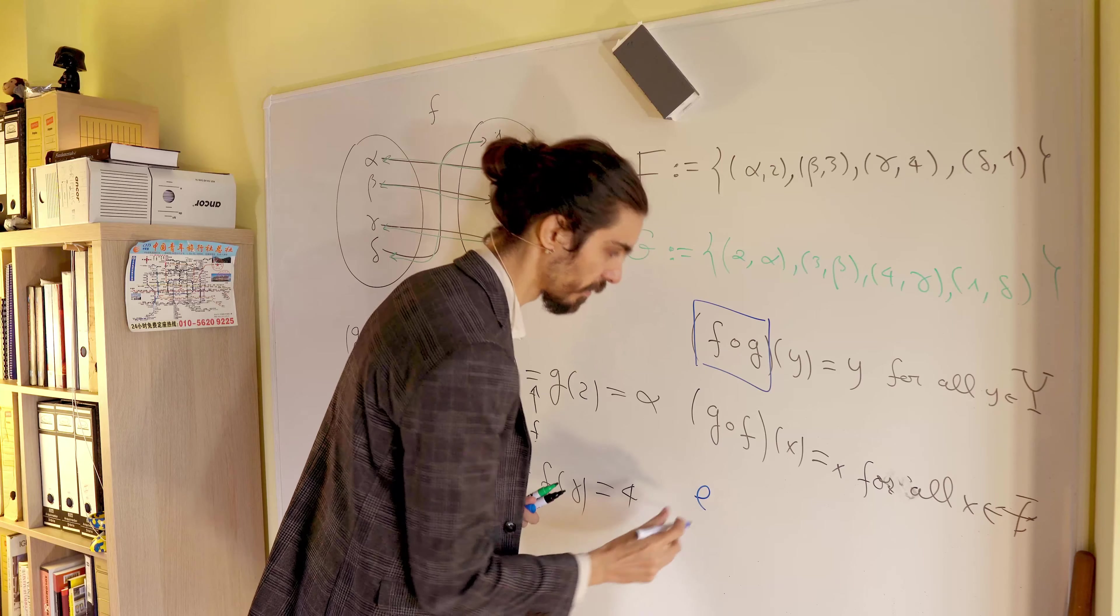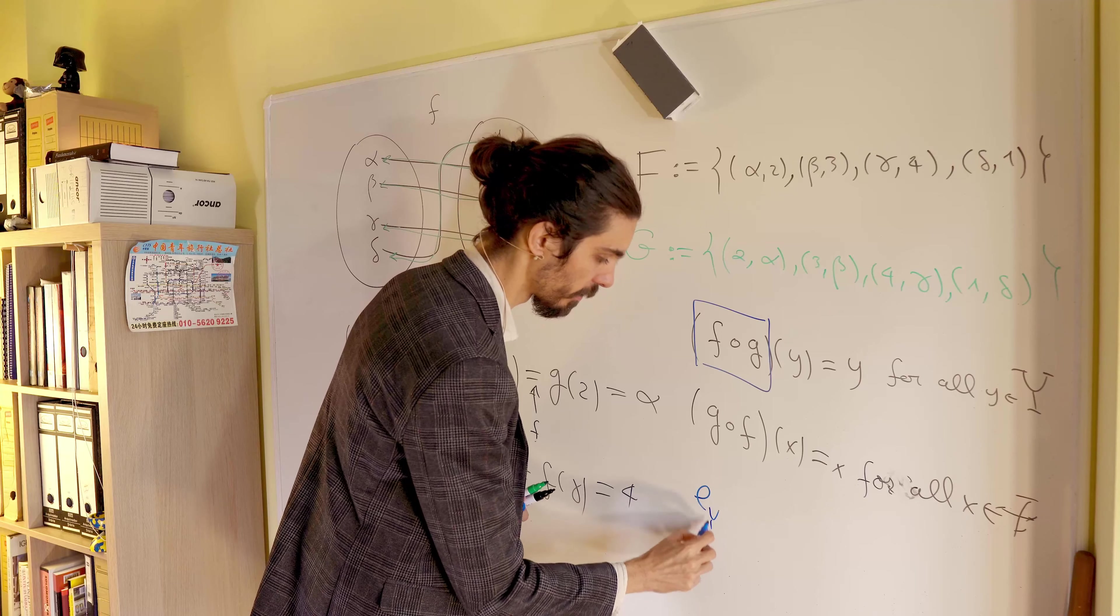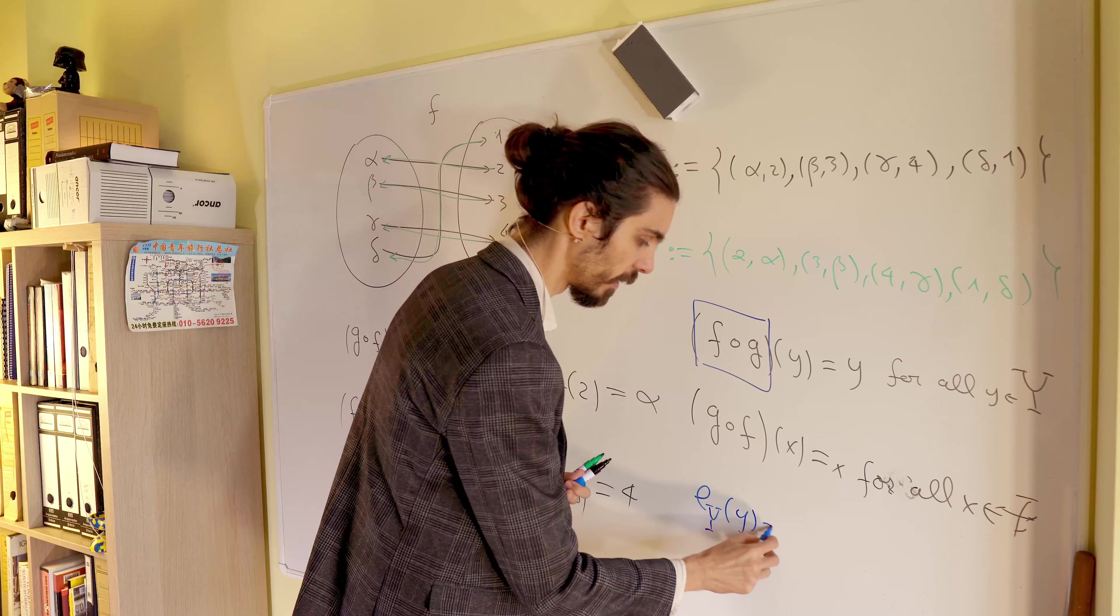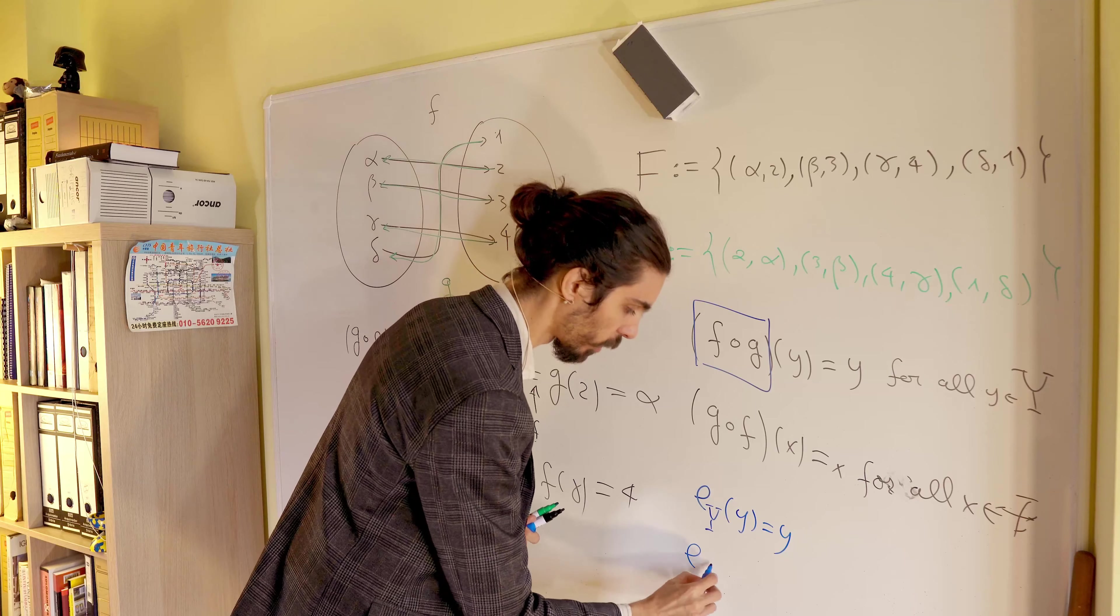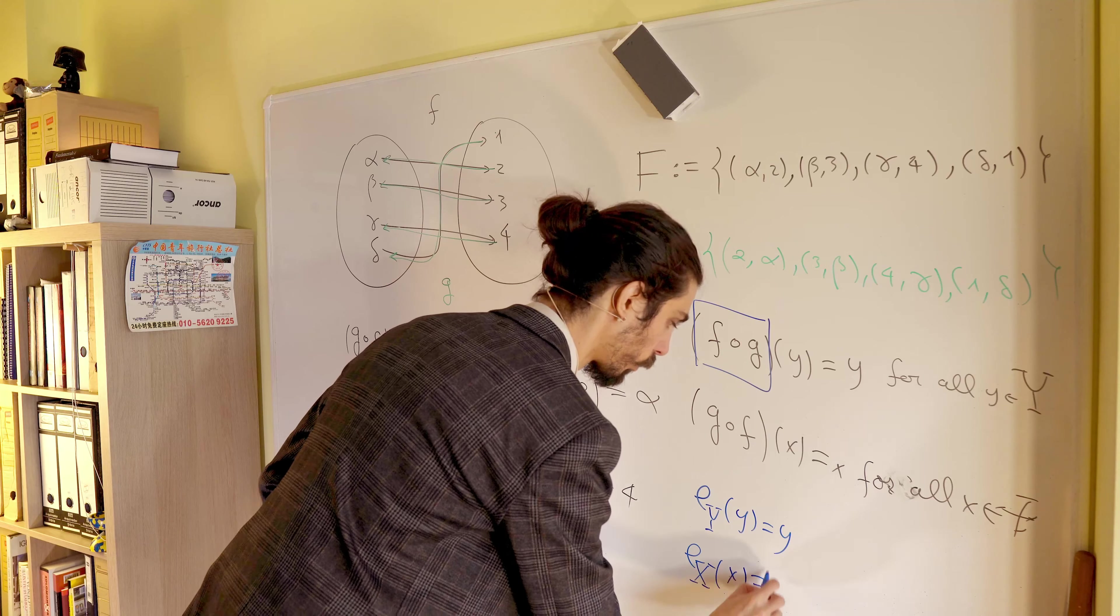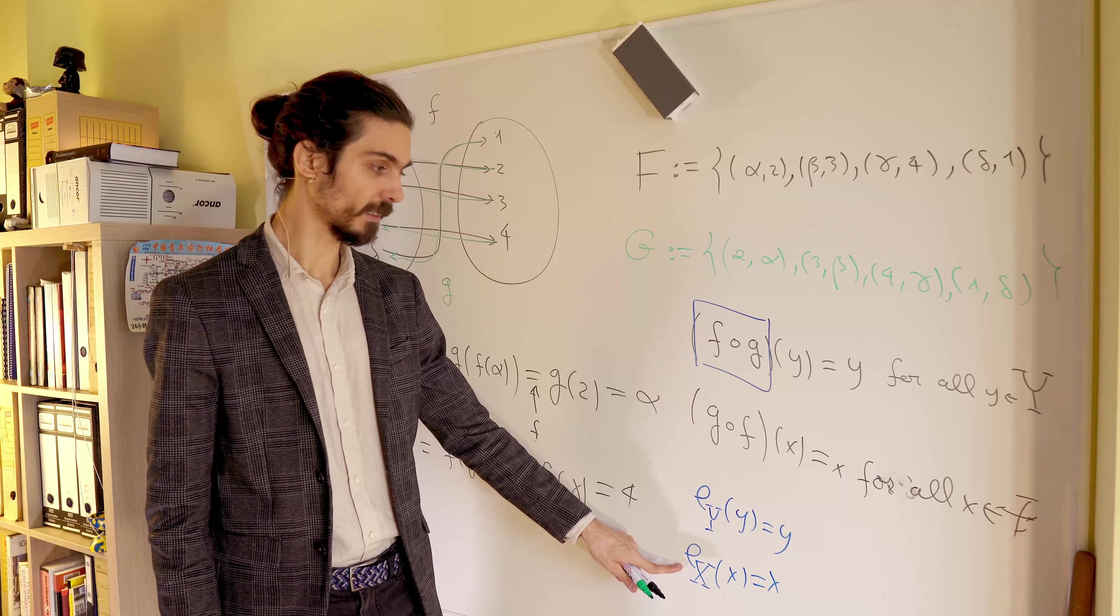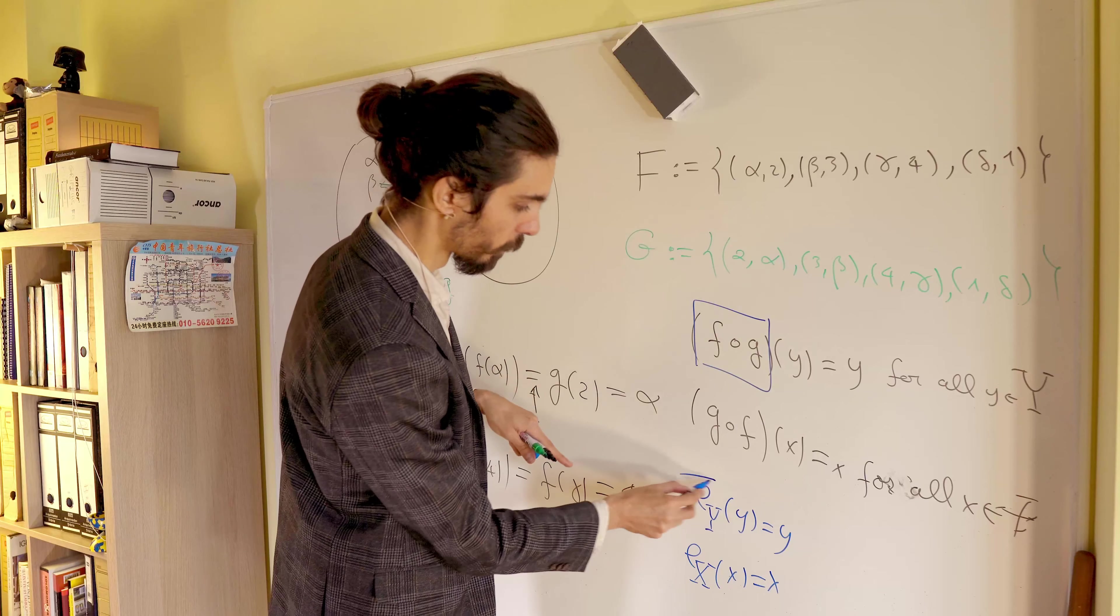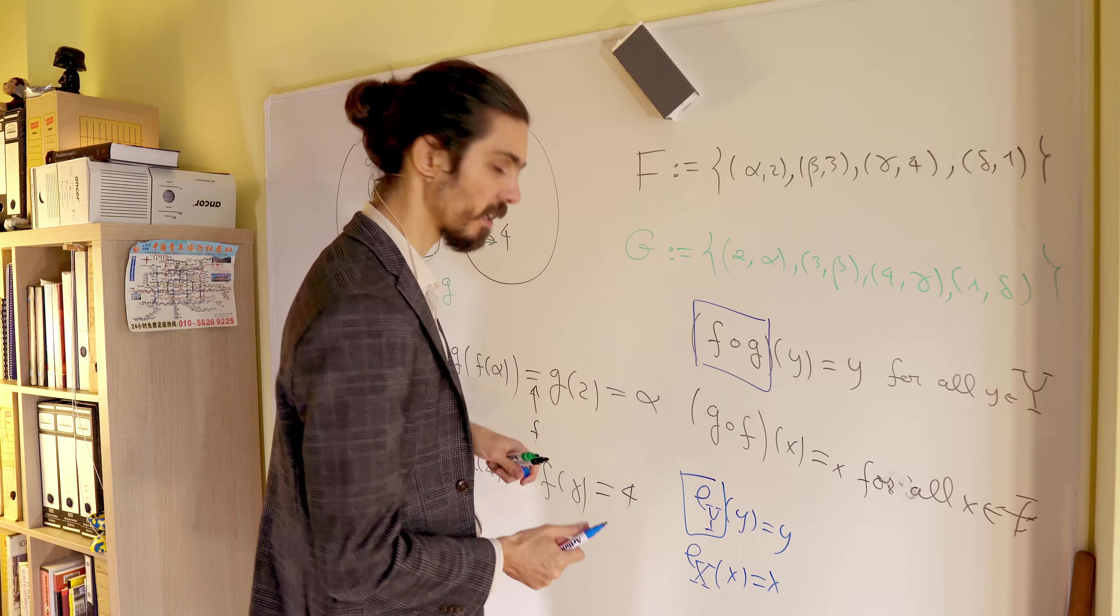You see, let me write e of y. When it acted on y, it returns y. And recall that e of x of x is equal to x for every y or x. So by comparing these two things, you must conclude that this thing here must be this thing.